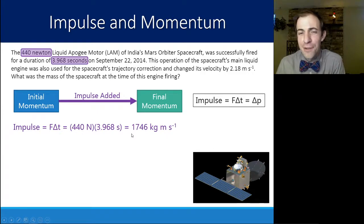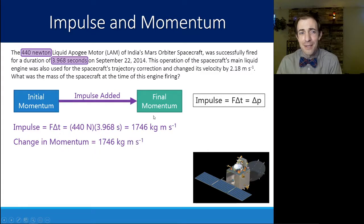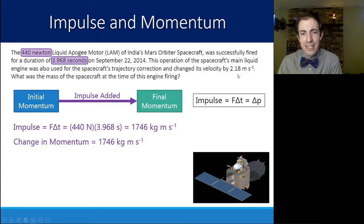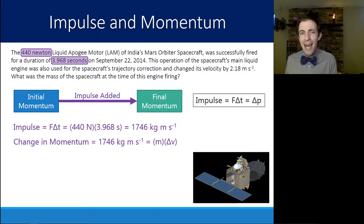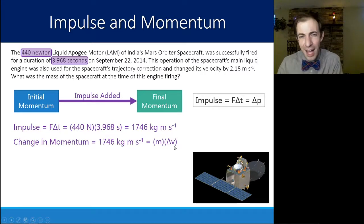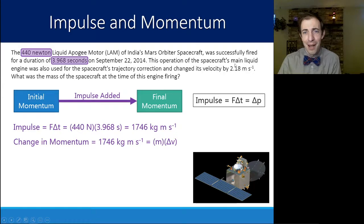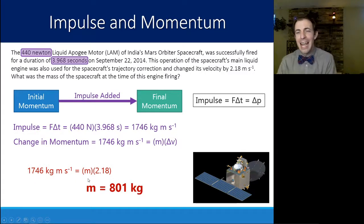That gives us 1746 kilogram meters per second, which is the difference between initial and final momentum — the change in momentum. Since the spacecraft's mass is relatively constant (losing only a little when the motor fires), the change in momentum results in mass times the change in velocity. The change in velocity was 2.18 meters per second, so solving gives a mass of about 801 kilograms.